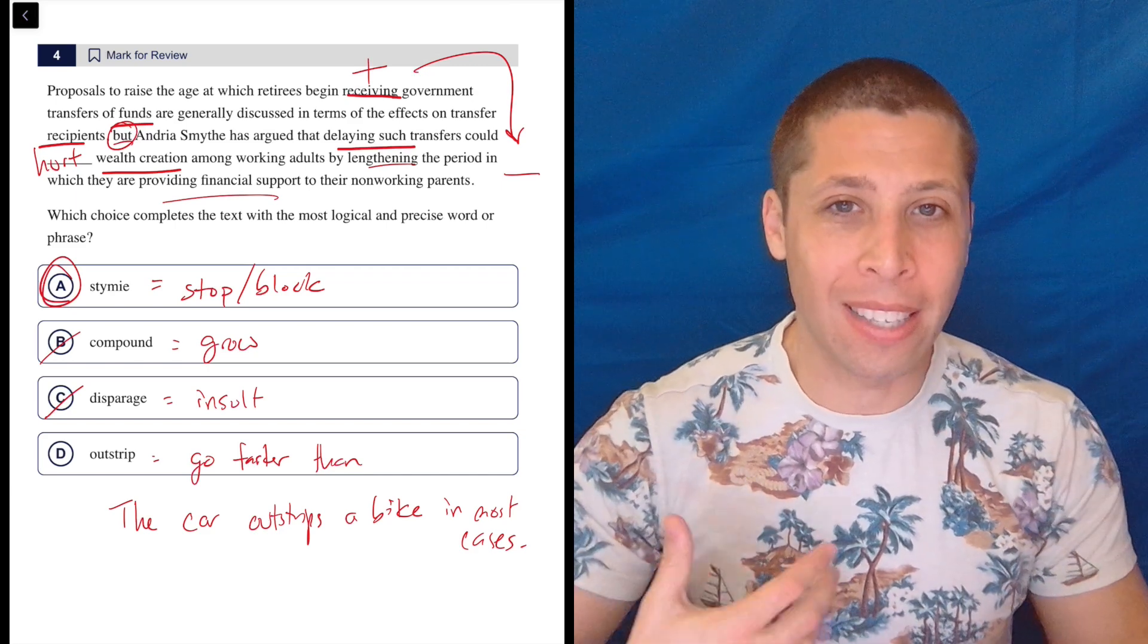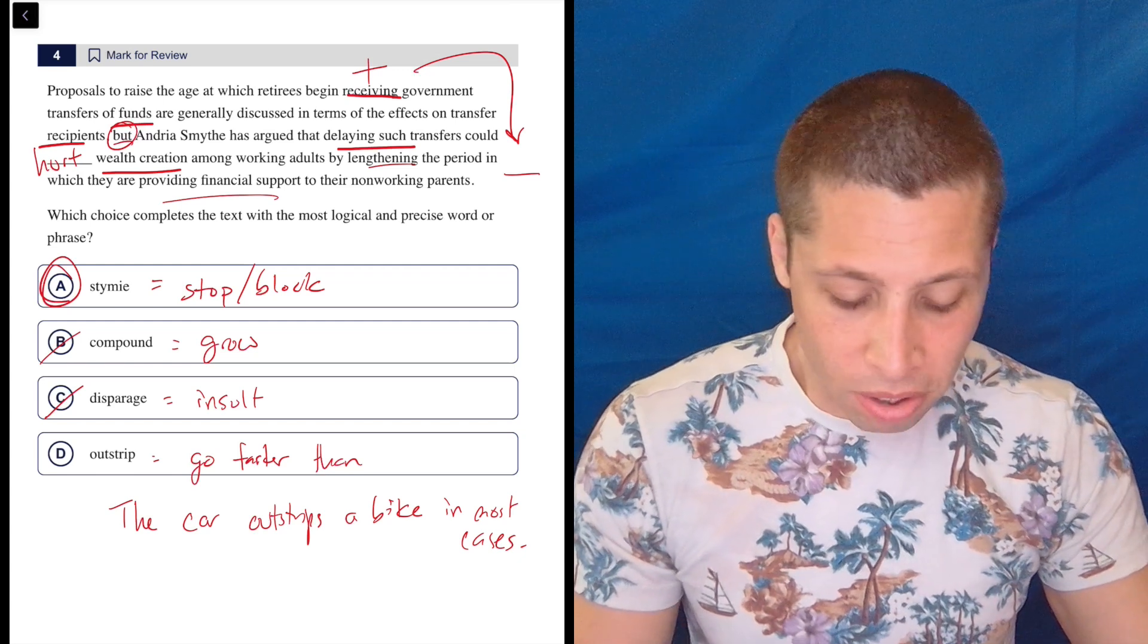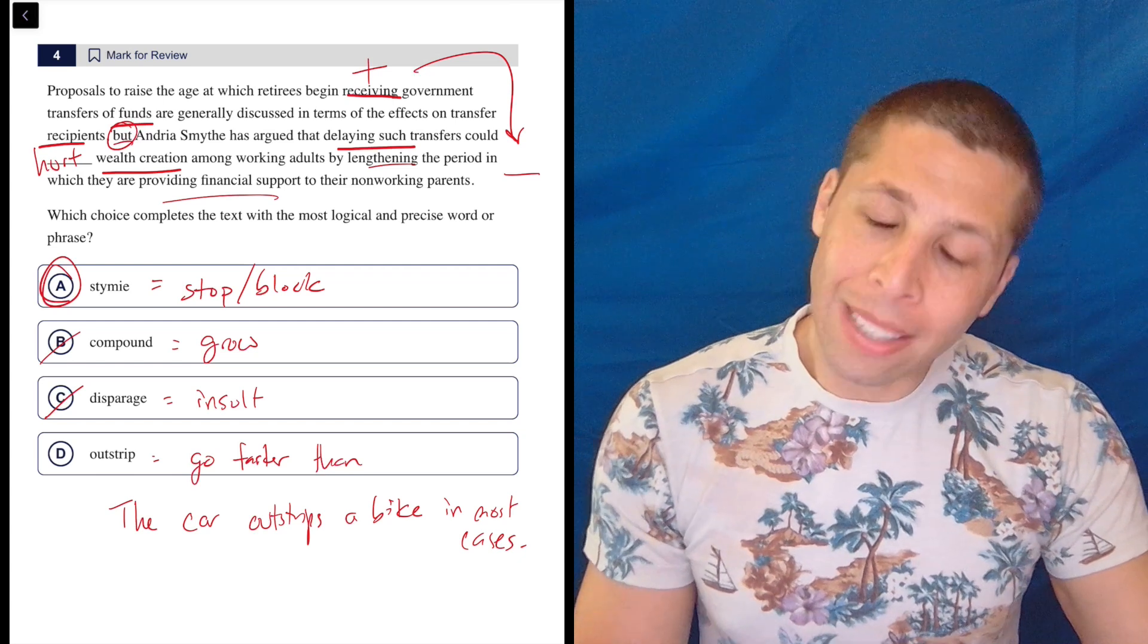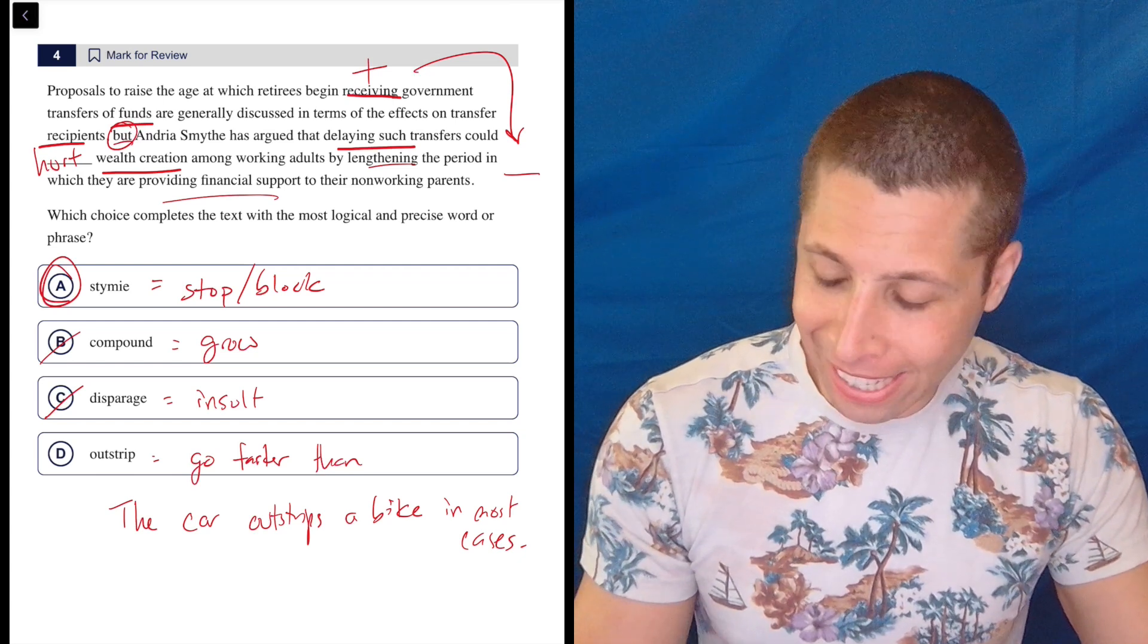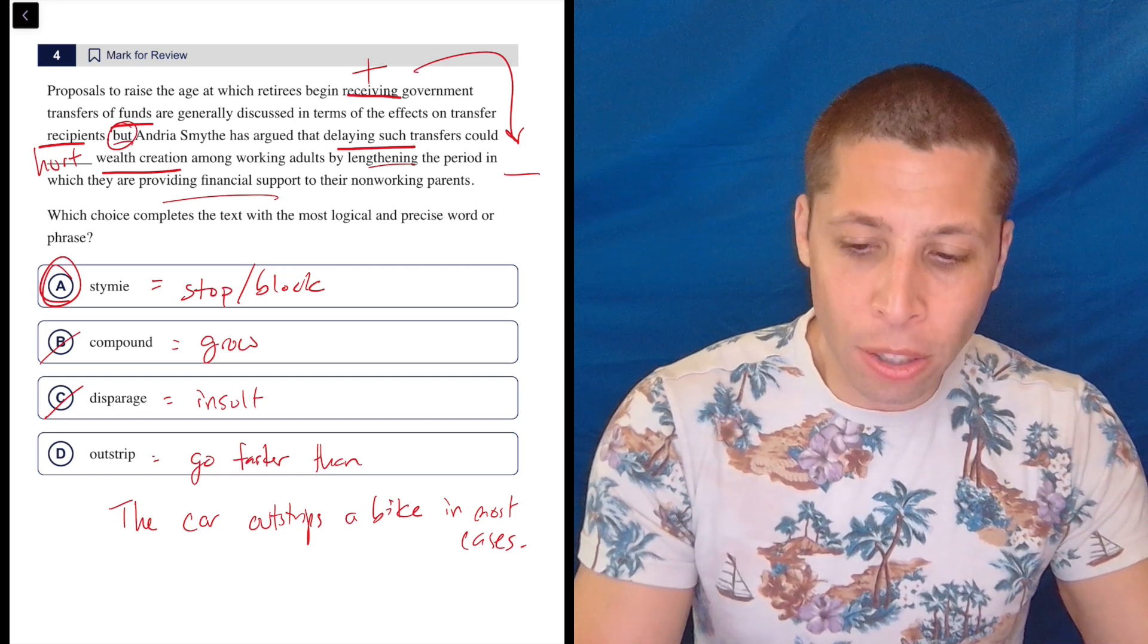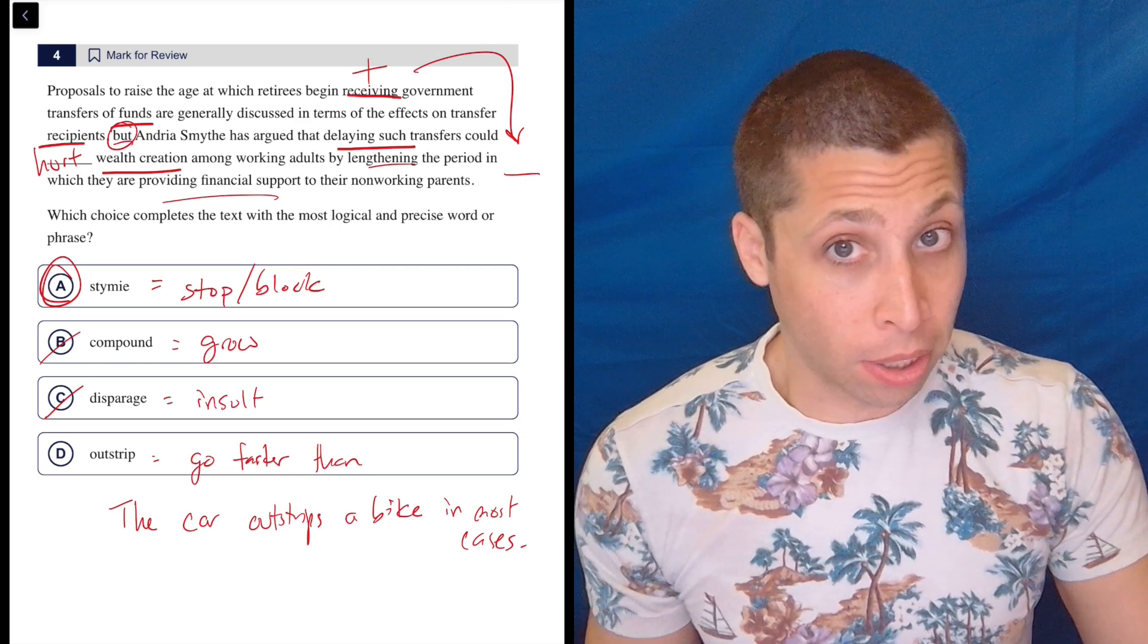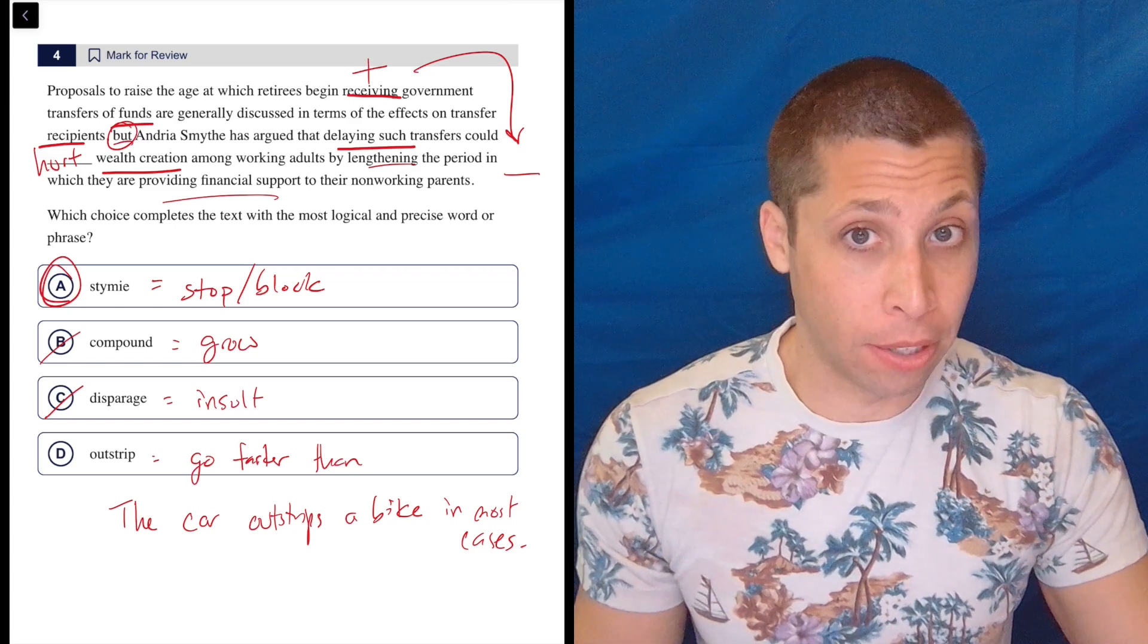It's going faster than it. It's overpacing it, I guess. And so here it just doesn't make any sense. Delaying such transfers could outstrip wealth creation. We might say something like... that it's so hard here. It's so subtle.